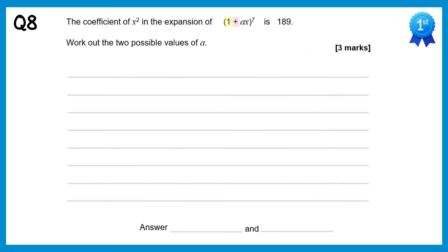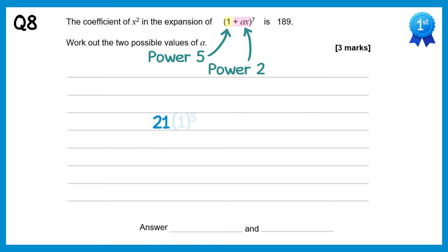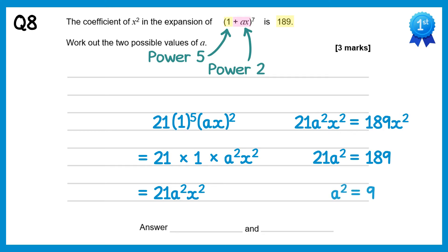For this question a equals 1 and b equals ax. We want the coefficient of x squared, so we take ax to the power 2 and 1 to the power 5, since 2 plus 5 makes 7. We need the seventh row of Pascal's triangle, and the coefficient corresponding to 1 to the power 5 is 21. So we have 21 times 1 to the power 5 times ax all squared, which simplifies to 21a²x². We're told the coefficient is 189, so 21a² = 189, giving a² = 9, and therefore a equals 3 or negative 3.